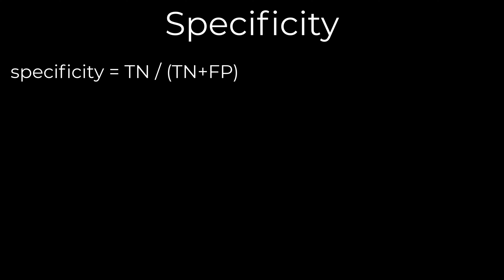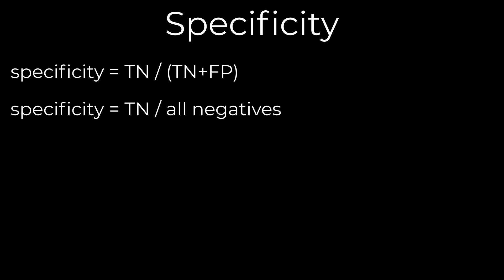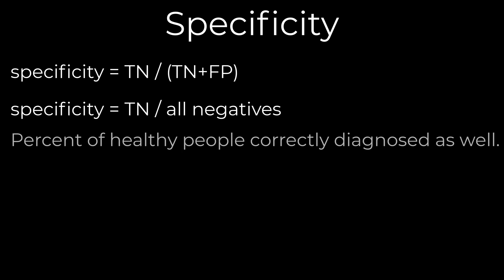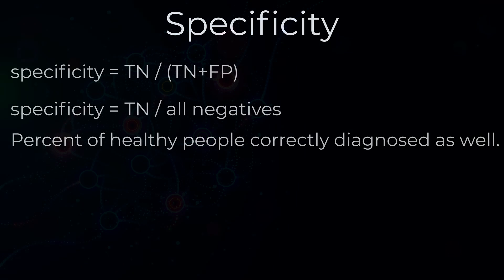Specificity is the number of true negatives (TN) divided by the number of true negatives (TN) plus the number of false positives (FP). TN plus FP is the same as the number of all negatives. Specificity is the percentage of people without a disease that a test correctly identifies as not having that disease.